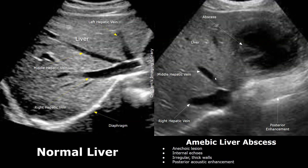Here is another case of a liver abscess. It is mostly anechoic and has internal echoes and thick irregular walls. Posterior acoustic enhancement is present. It had no internal vascularity on color Doppler. This was an amoebic liver abscess.